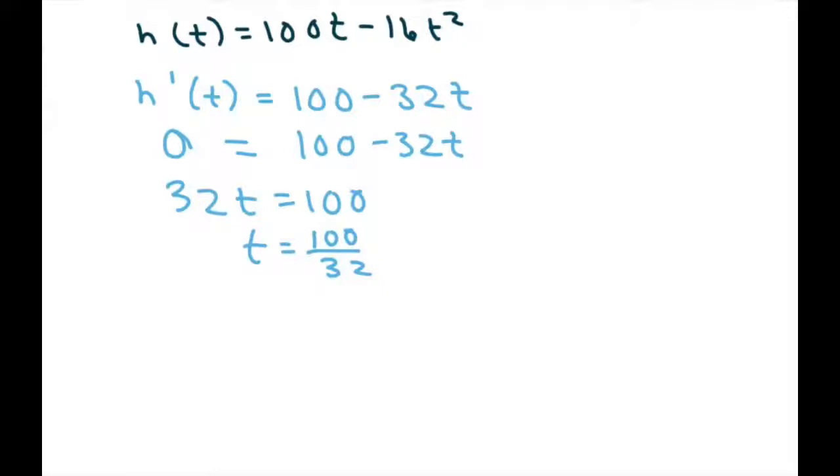Now, to find the maximum height, we simply plug t equals this value back into the original equation for height. So our height at t—our t now is 100/32. I guess we could have reduced that. Oh well.